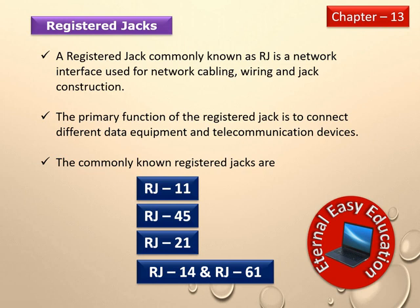Before learning the Types of Jacks, what is a Registered Jack? A Registered Jack, commonly known as RJ, is a network interface used for network cabling, wiring, and jack construction — that means the connectivity between two components in a network. The primary function of the Registered Jack is to connect different data equipment and telecommunication devices.